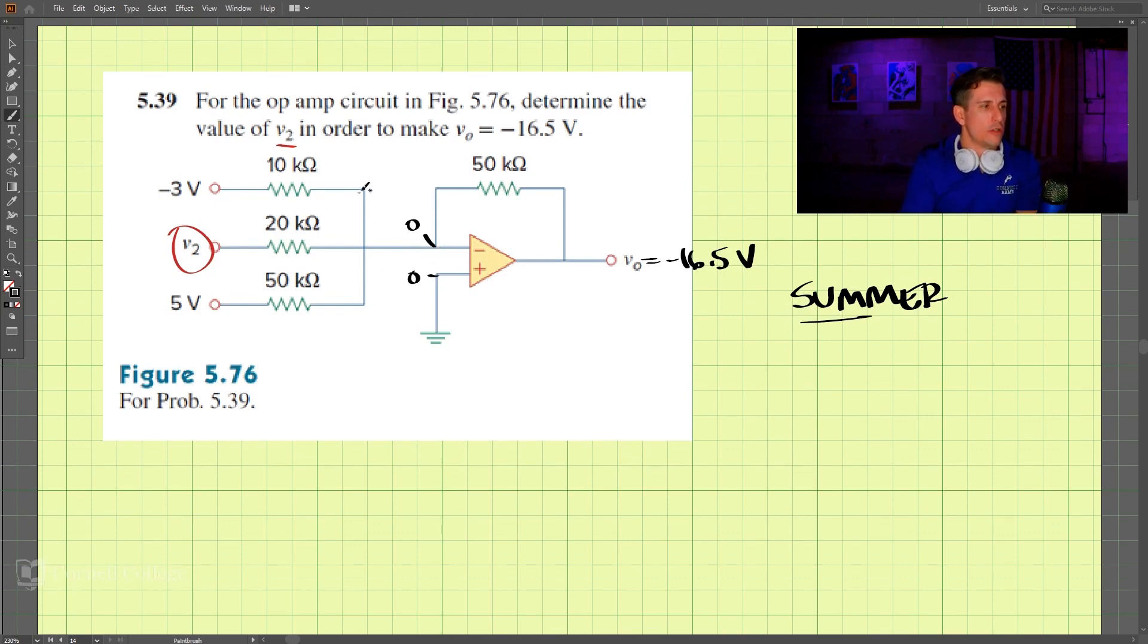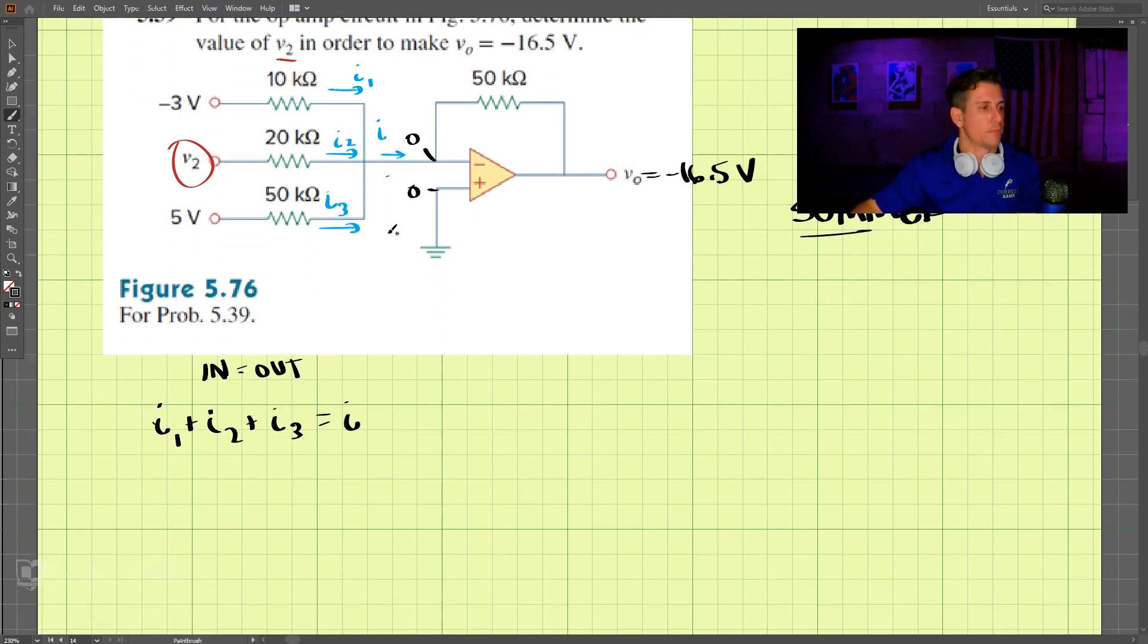So zero volts here, zero volts here. If we take a look at the currents, we can call this I1, I2, and I3 here. And we'll do KCL here, and we'll just call this I going out. So let's do KCL. We have in equals out. Coming in, we have I1 plus I2 plus I3, and going out we just have I.